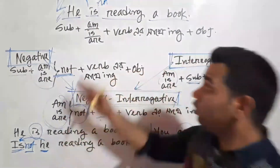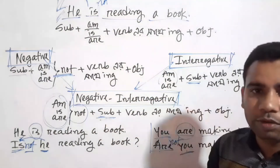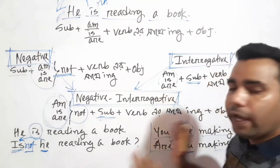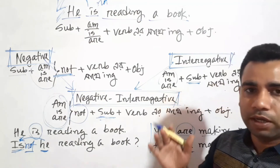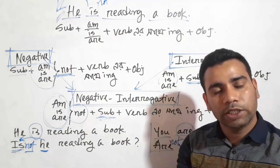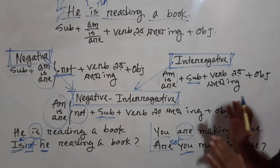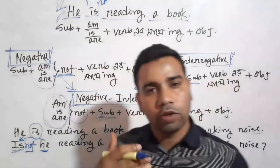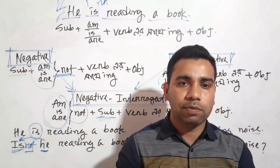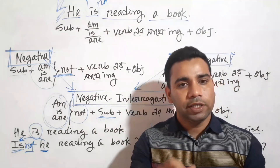This is the present continuous sentence. We now know how the negative is formed and how the interrogative is formed. The interrogative places the auxiliary before the subject, and adding 'not' gives the negative interrogative. This is the sixth class and will be uploaded in the description.